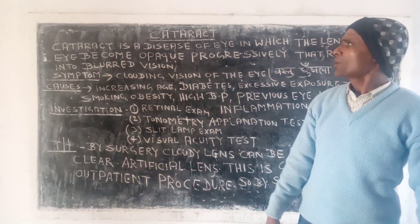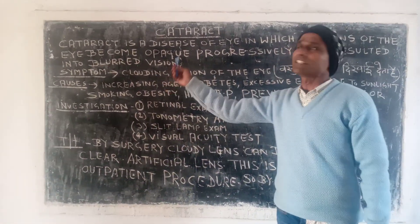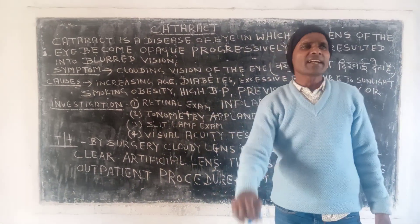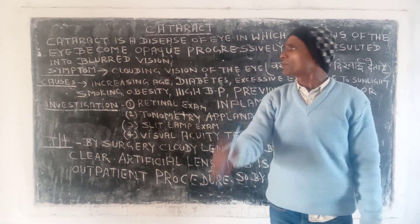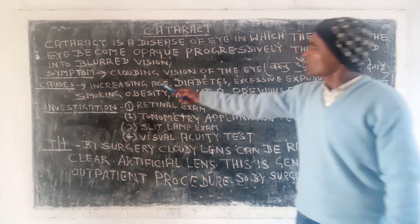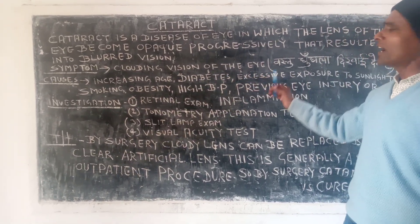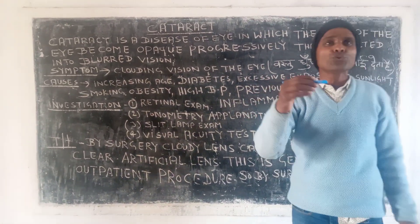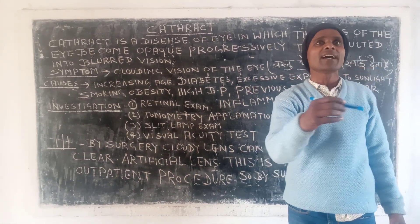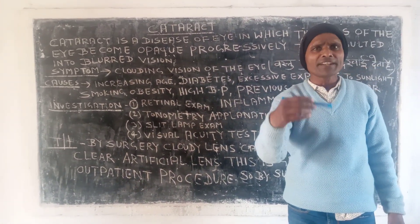Now, what are the symptoms in cataract? Cataract causes a cloudy vision of the eye. The vision becomes cloudy and things are not clearly visible.